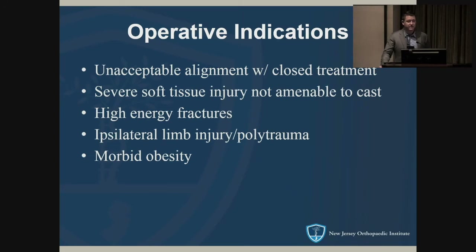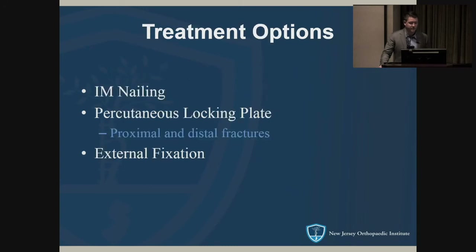Indications to fix include unacceptable alignment with closed treatment, severe soft tissue injury, open fractures, high-energy injuries, ipsilateral lower extremity injury, polytrauma, or morbidly obese patients not amenable to casting and bracing. Options include nailing, plating, or external fixation.